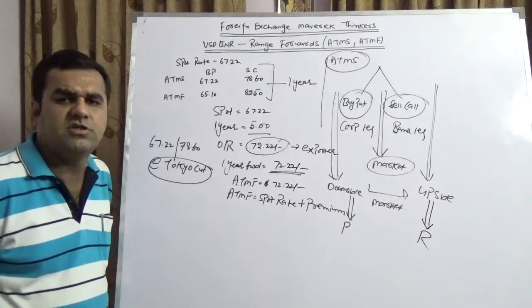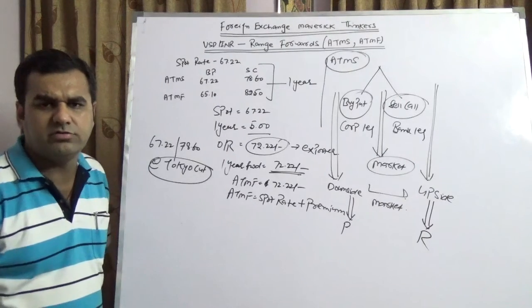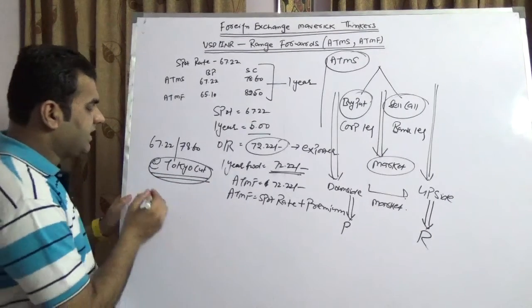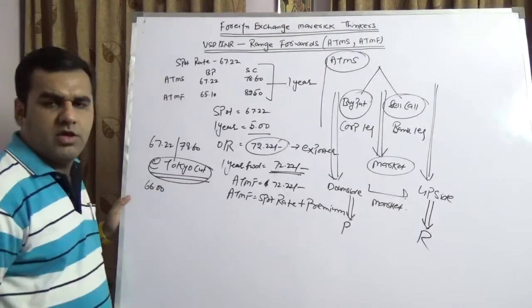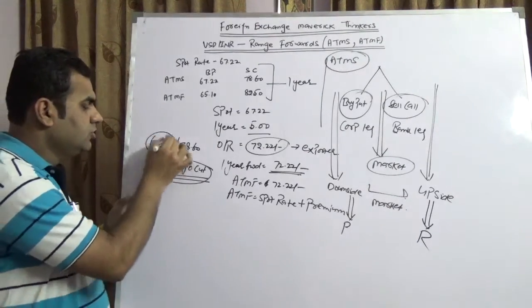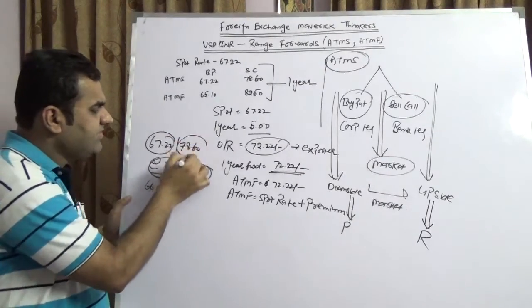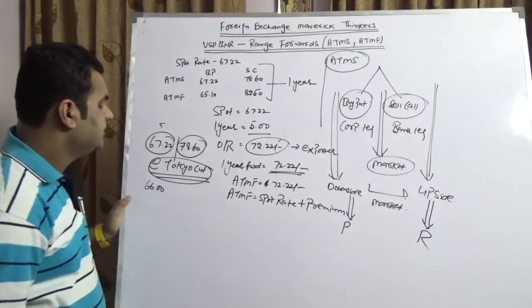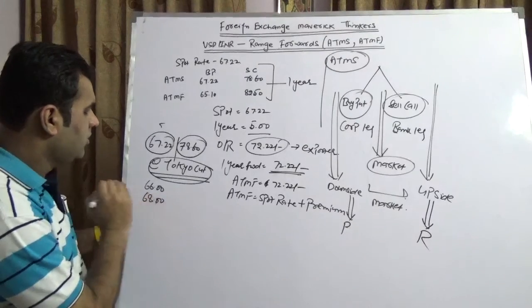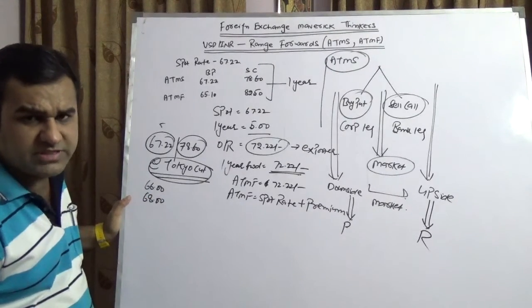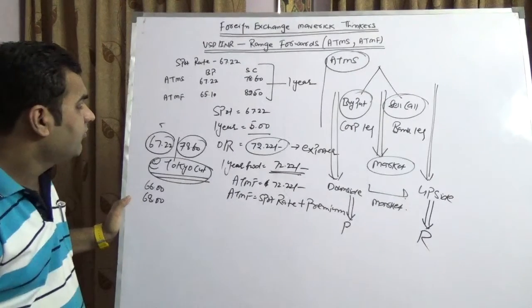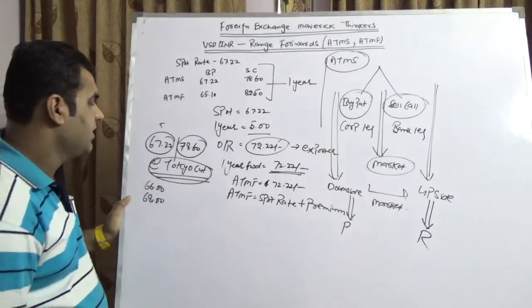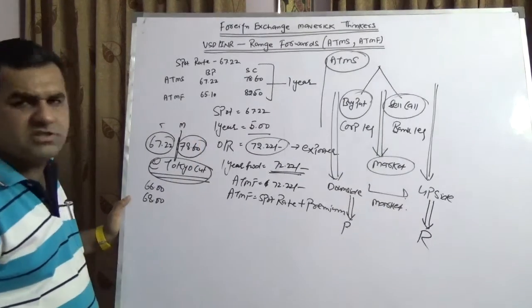What do you mean by Tokyo cut? You can refer our YouTube channel. Suppose just two days before the Tokyo cut published at 66, you would have a right to sell at 67.22, you would exercise that. Bank is having a right to buy from you at 78.60, would bank buy? Definitely not, so you are here. Suppose the Tokyo cut published at 68, you are having right to sell at 67.22, would you sell if market is at 68? Surely not.